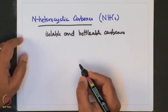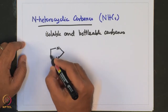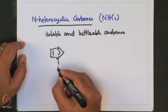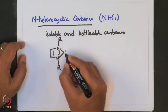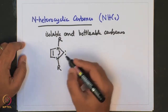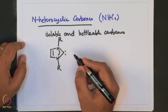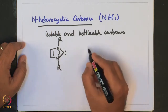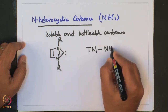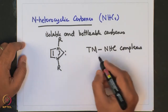These NHCs were first prepared by Erdengo, and they contain an imidazole-based ring with substituents on the nitrogen atoms and a free carbene lone pair. These carbenes, when complexed to metal, show remarkable catalytic properties, and that is why transition metal-bonded NHC complexes have gained catalytic prominence.